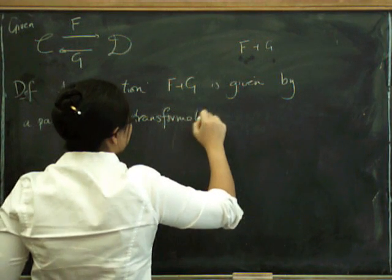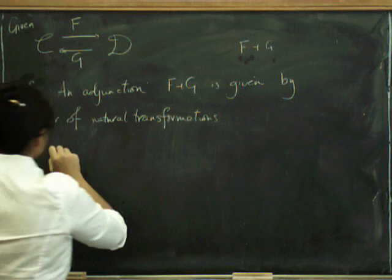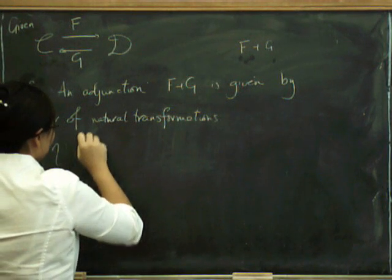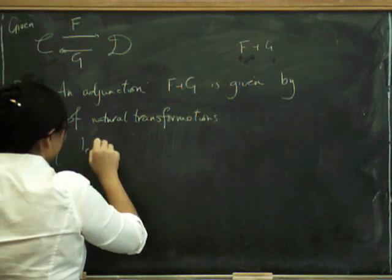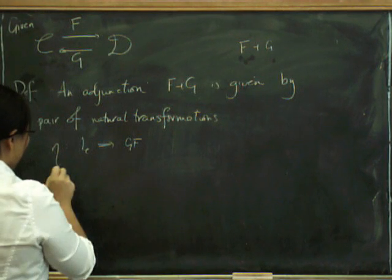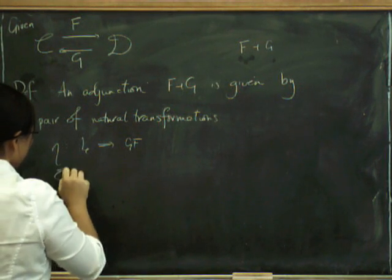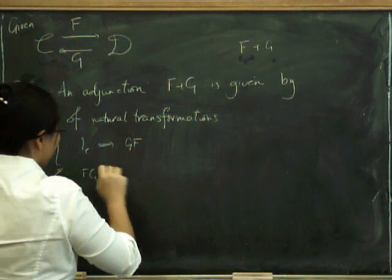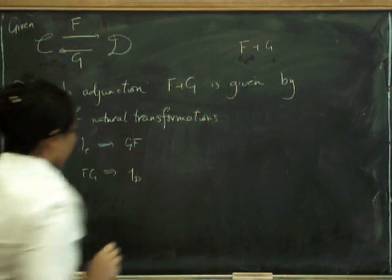Natural transformations, traditionally called eta, which is the one that goes from the identity to GF, and epsilon, which is from FG to the identity on D.